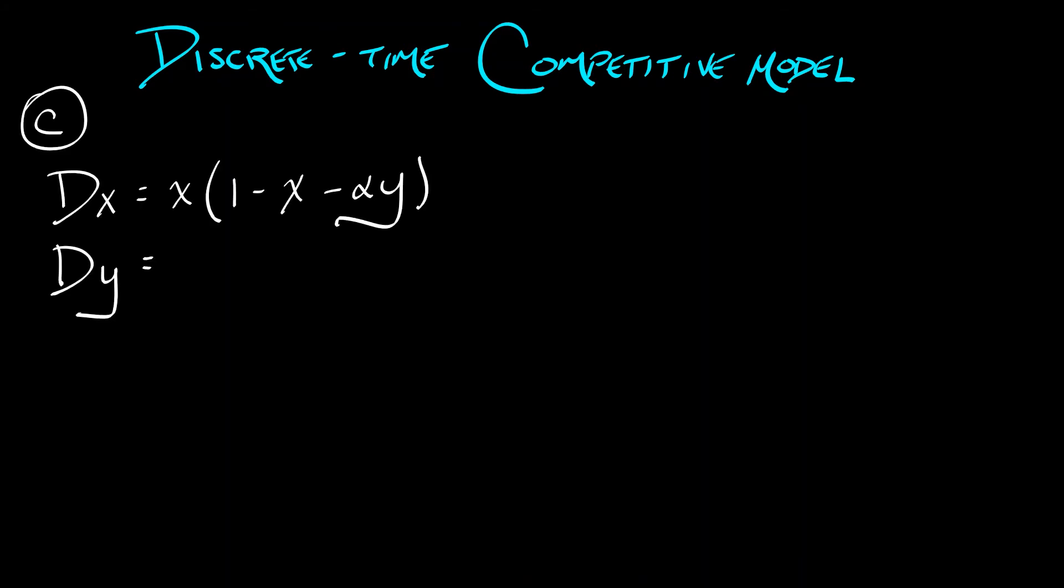For example, if we go back to the competitive model that we were just working with, recall what the equations for those were in continuous time. We can build a discrete time model by swapping out the differentiation operator capital D for the finite difference operator delta.